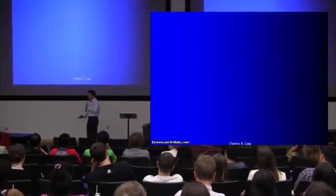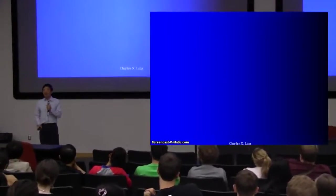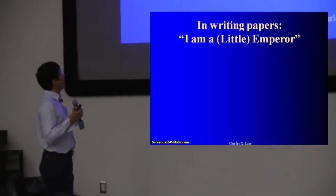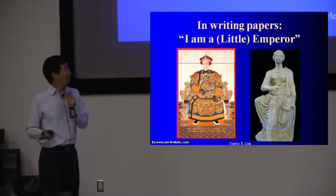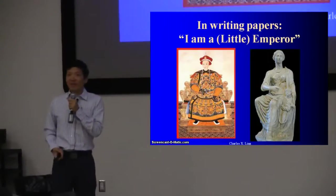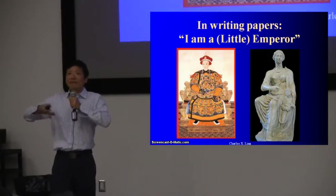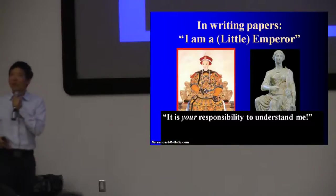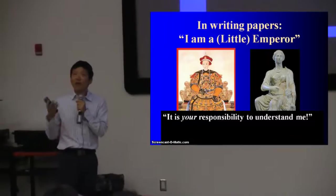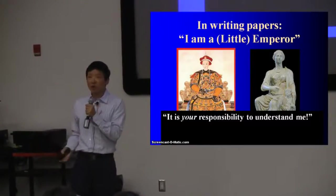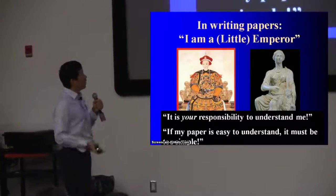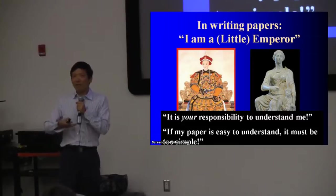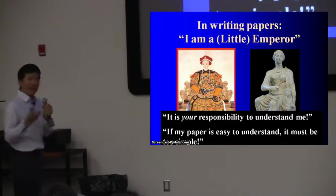Now let's say you have some research ideas and it's about time to write papers. Some common mistakes come up here. The first is what I call the 'little emperor' misconception. These are empires — one Chinese empire, one Roman empire — and doing research and PhDs is very sophisticated. So some students think: therefore it's your responsibility to understand my work. When they write up their paper and thesis, they don't think from another person's point of view. Sometimes they think if their paper is easy to understand it must be too simple, so they write papers that are purposely harder to read. That's bad.